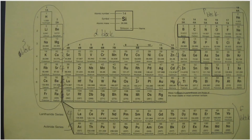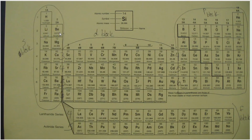I've got here my periodic table that is specially labeled to help us understand electron configuration. The S sublevel can hold a grand total of two electrons. This section right here on the periodic table is two elements wide, which is why we call this the S block.